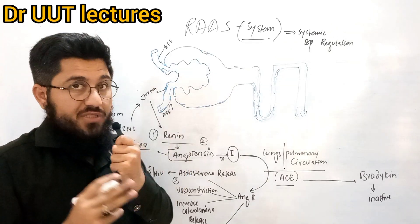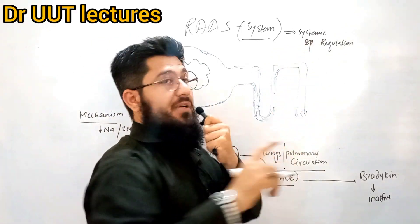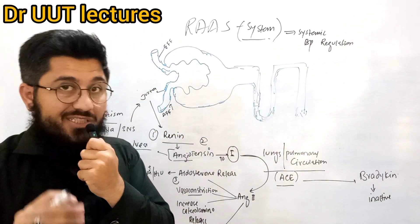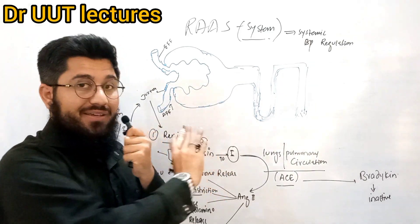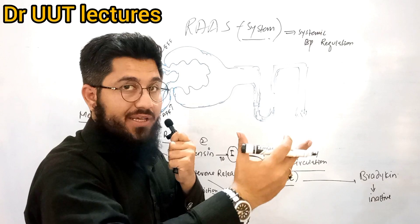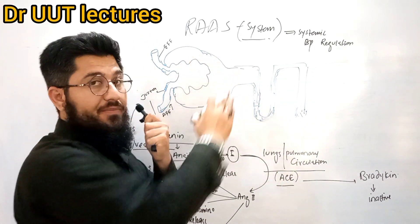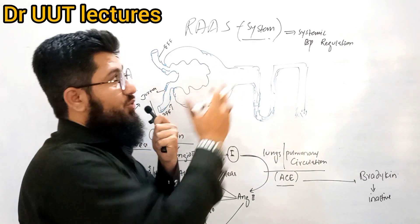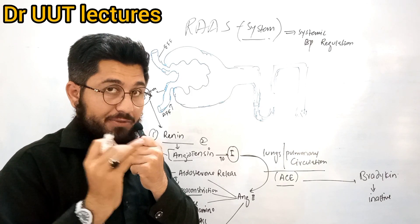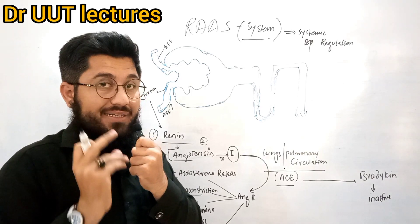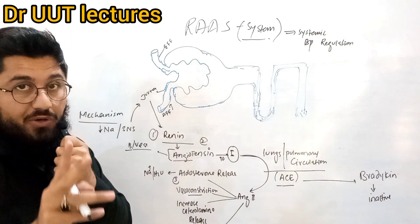All three are responsible for a very specific job — that is maintaining systemic blood pressure. Systemic blood pressure is controlled and maintained by means of these three, which is why they form the RAS system. This particular system is used for maintaining blood pressure.